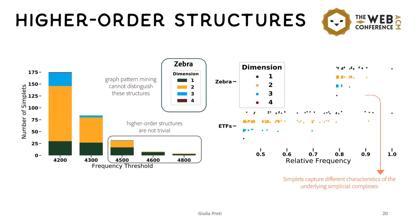For example, we can see how the frequent simplets change at different frequency thresholds. And as you can see from the left chart, where we have different colors indicating the simplets with different dimensions, we can see that simplets of dimension 3 persist over multiple frequency thresholds, which indicates that these higher order structures are not trivially frequent.